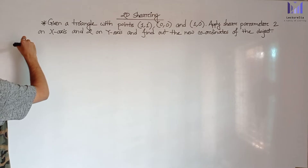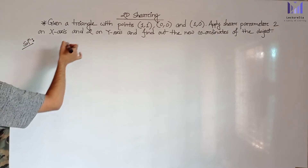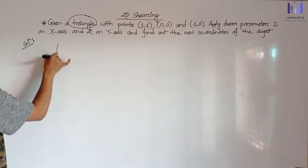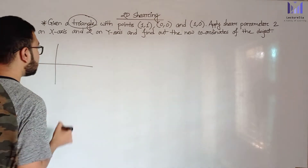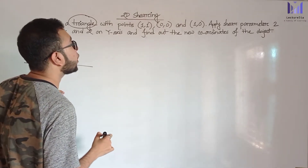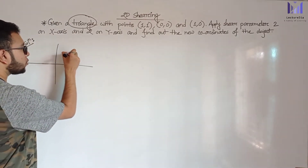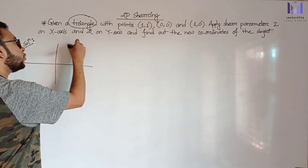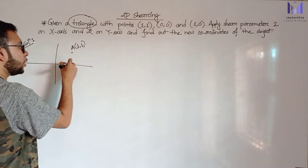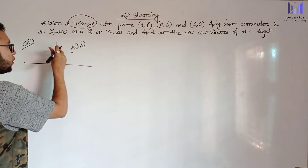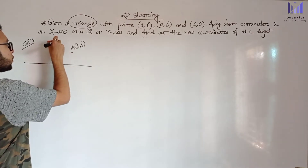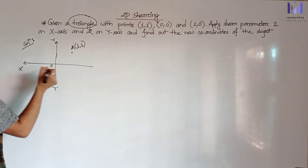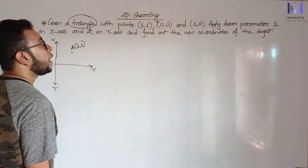Initially the question gives us a triangle with points. For the shearing transformation in 2D, let's check: point (1,1) has an X prime and Y prime. The Y-axis value gives us Y prime and X prime from the X value - we can work through the transformation.